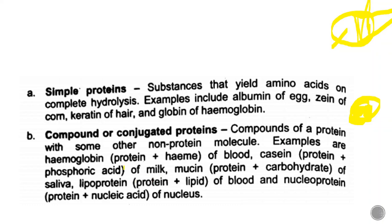Examples of conjugated proteins include: hemoglobin — protein plus heme, found in blood; casein — protein plus phosphoric acid, found in milk; mucin — carbohydrate and protein, found in saliva; lipoprotein — protein and lipid, found in blood; and nucleoprotein — protein and nucleic acid, found in the nucleus.